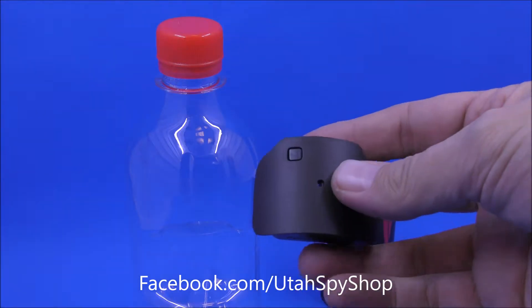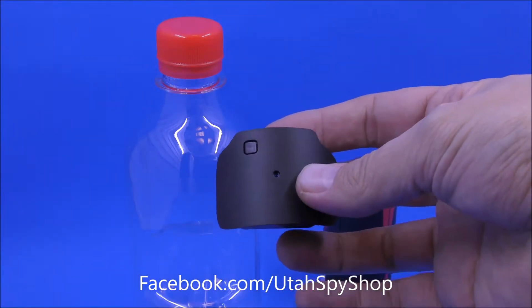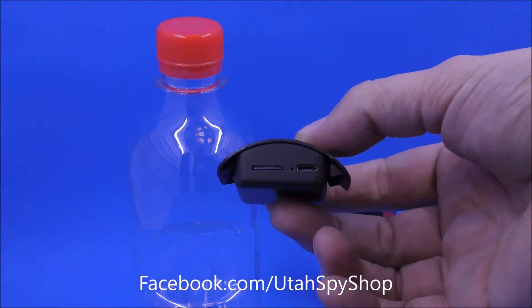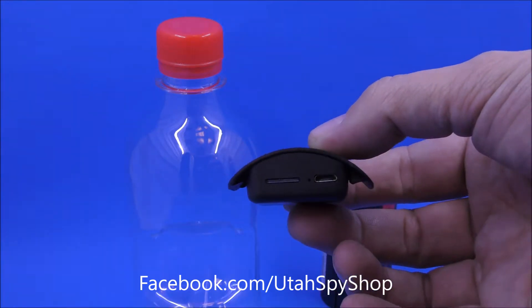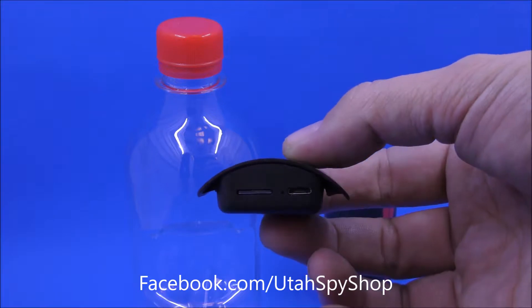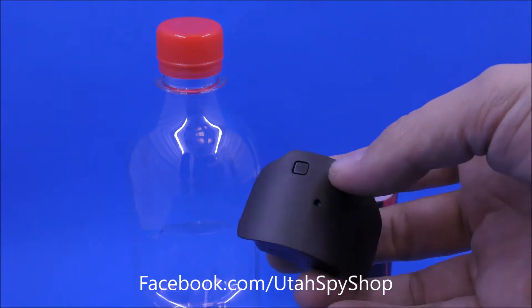Which is very easy to use. Basically on the bottom you have where we're going to put a 16 gigabyte SD card, and then you have the USB port, and then we have a simple button right here and the lens.